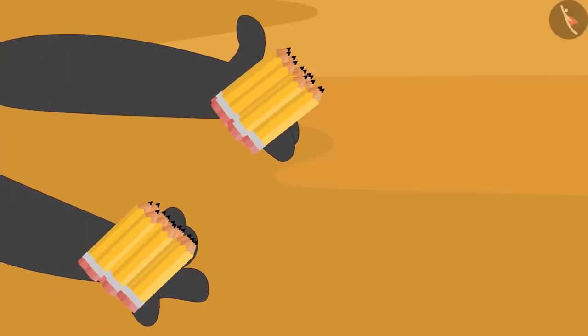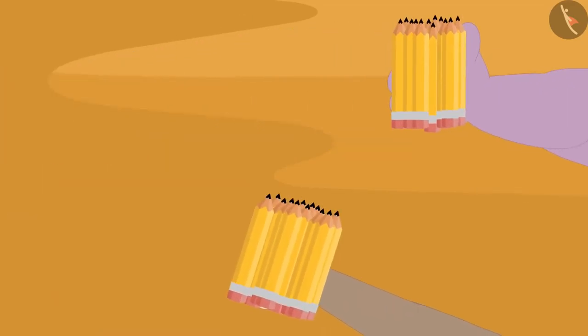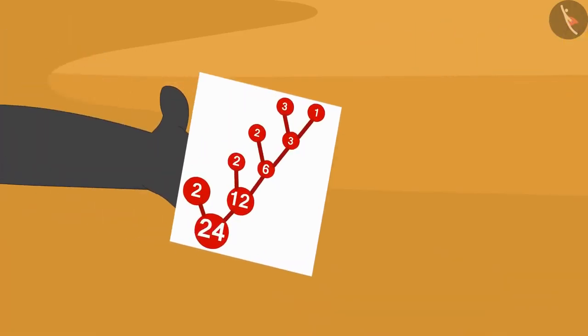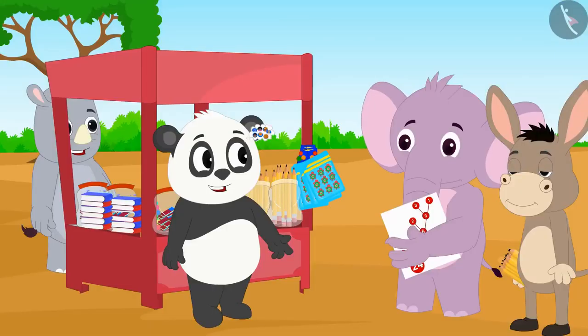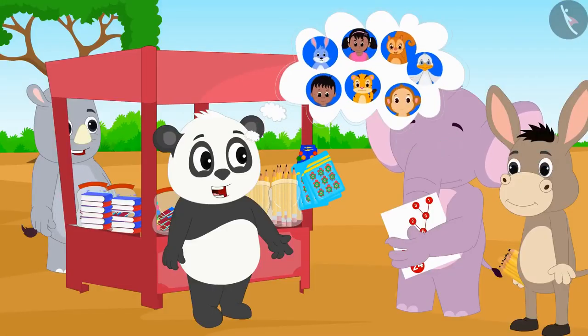Golu divided his 24 pencils equally among his 2 friends and after giving them a picture of the factor tree, accordingly, they should distribute the pencils equally to their friends.